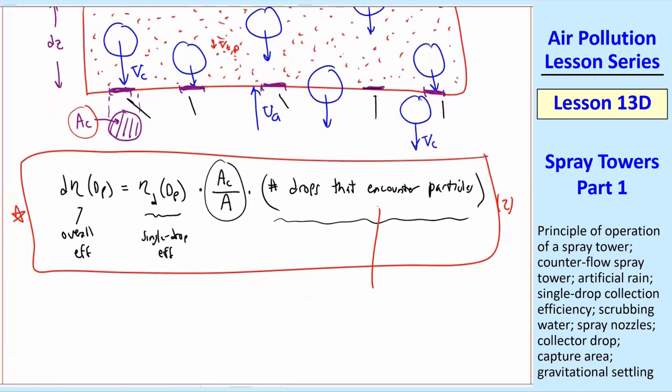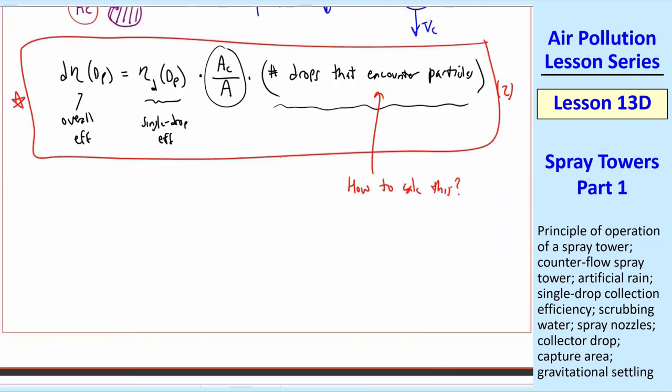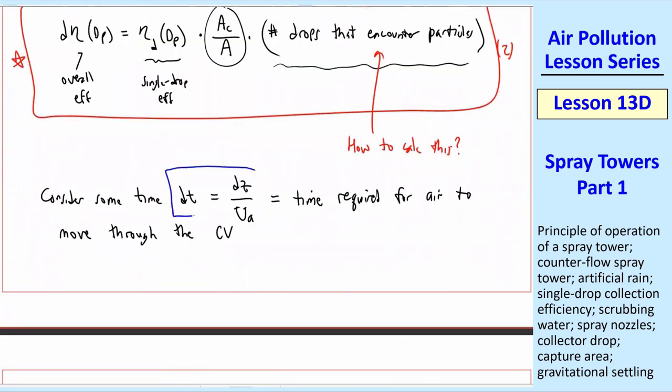We're making progress, but now we have to calculate this, the number of drops that encounter particles. So I like to say put on your seatbelts. This is going to get a little bit tricky, but it's kind of fun. So consider some time dt, which will equal dz over UA, which we define as the time required for air to move through the control volume. And you could see that from this control volume. The air is moving at UA, and it's moving a distance dz. So it takes time dz over UA to get through that control volume. That's how we get this, or dz equal UA dt.